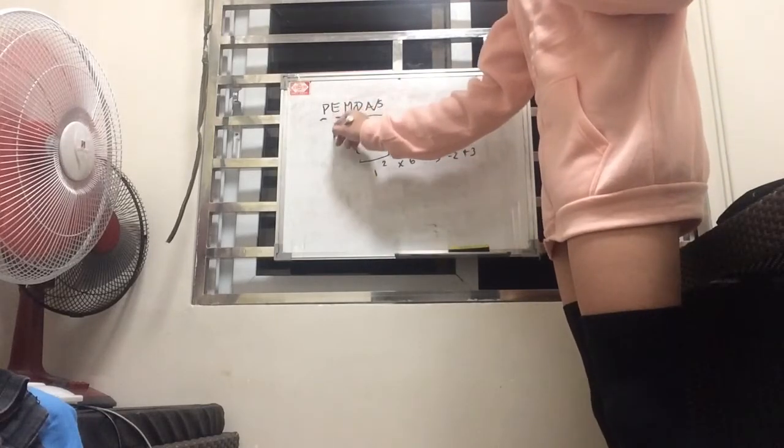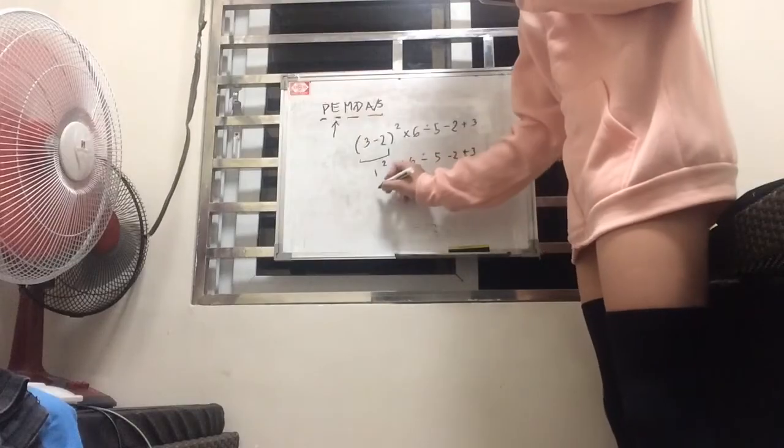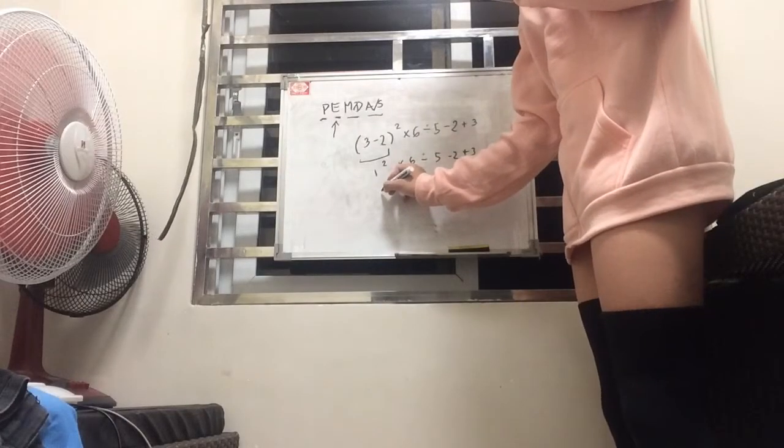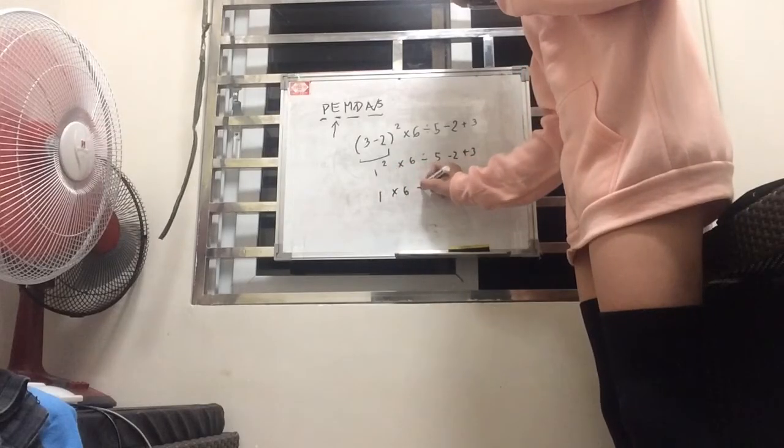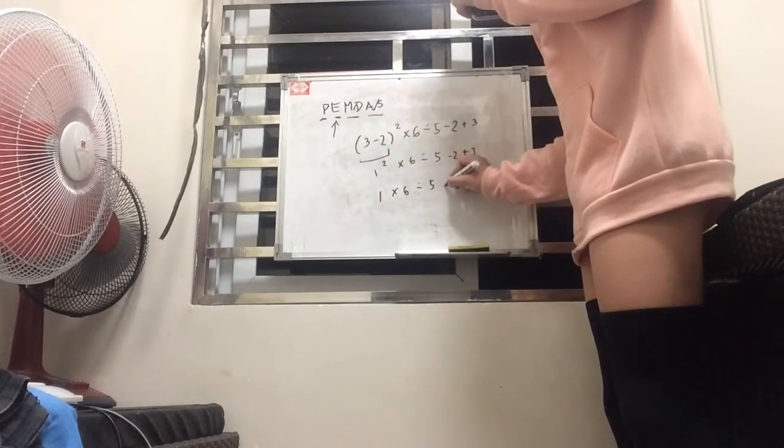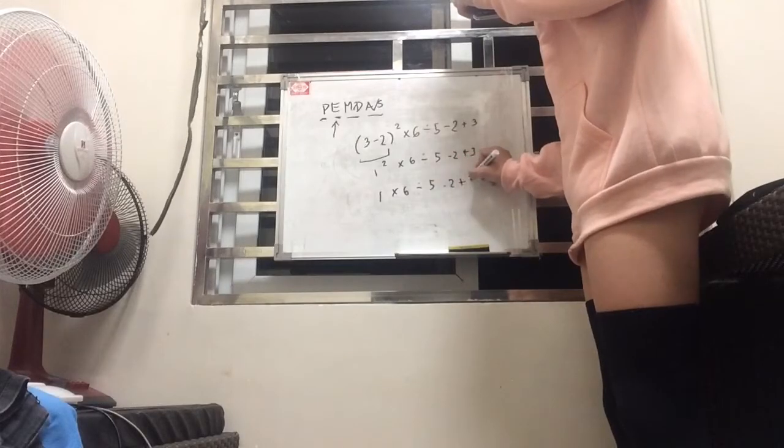And so according to PEMDAS, we do the exponent next. So we square 1, so we multiply 1 by itself. So it just gives us 1 times 6, divided by 5 minus 2 plus 3.